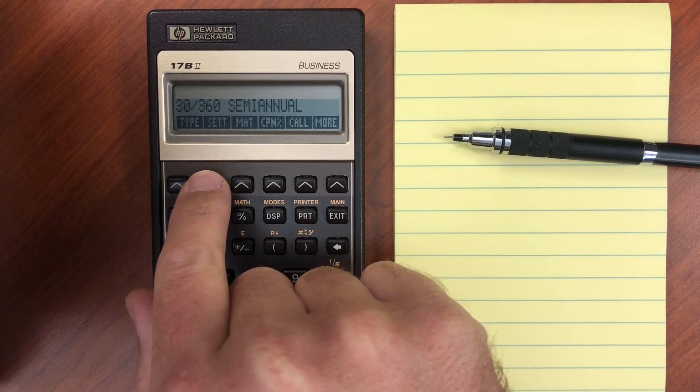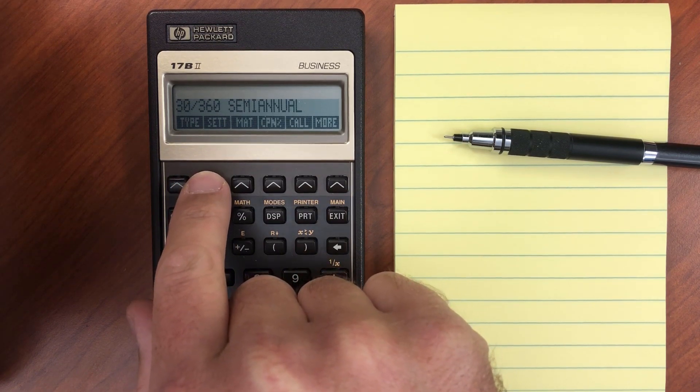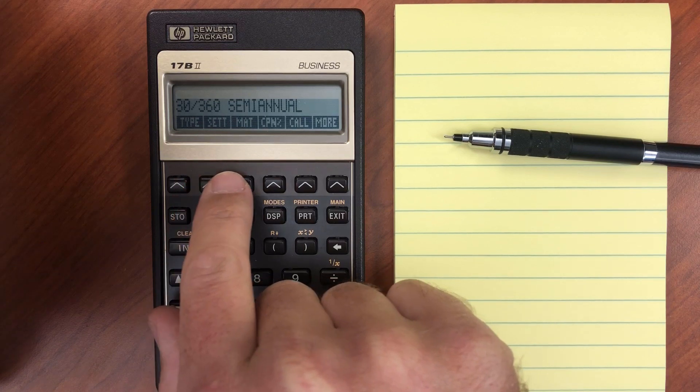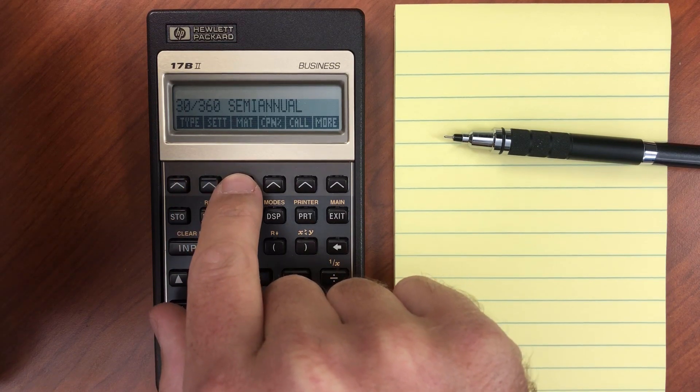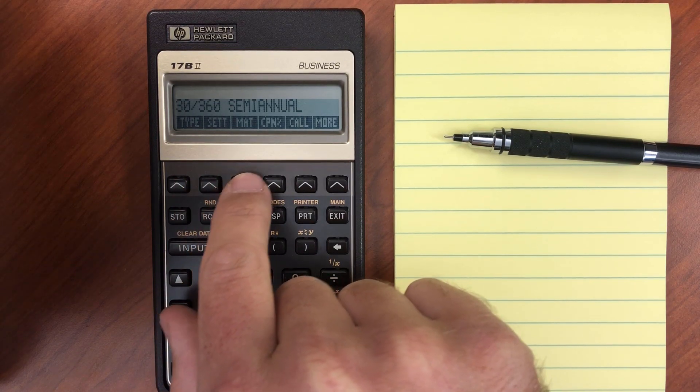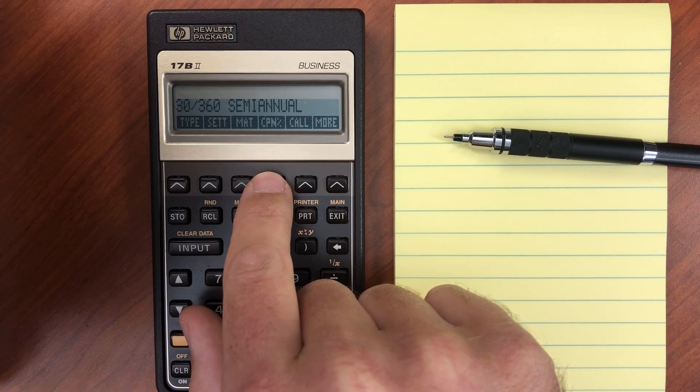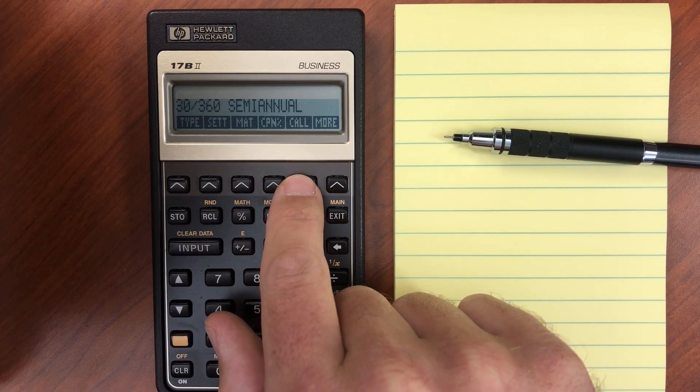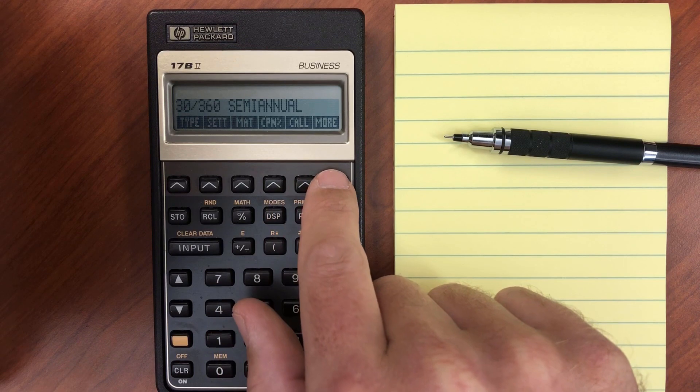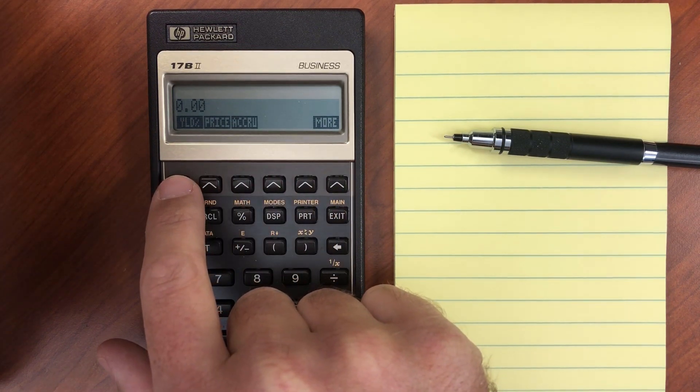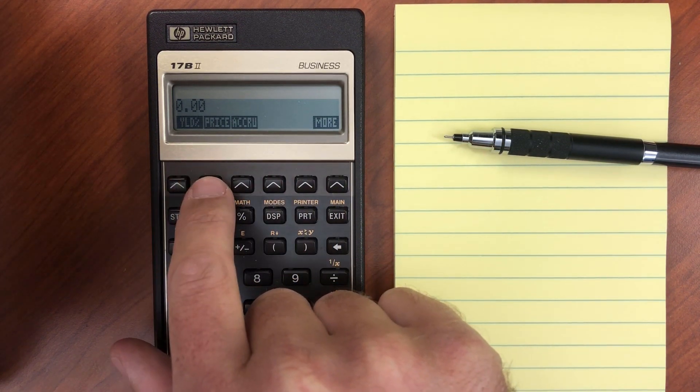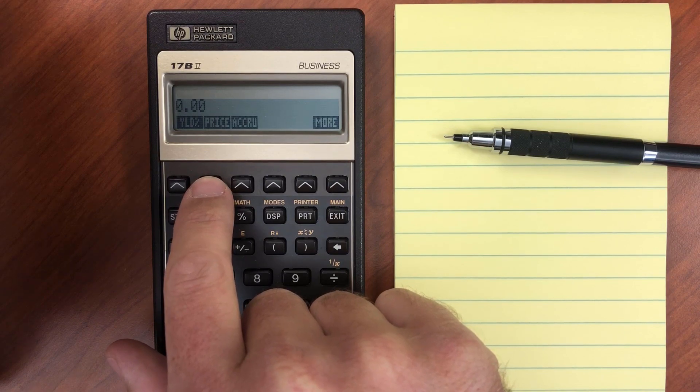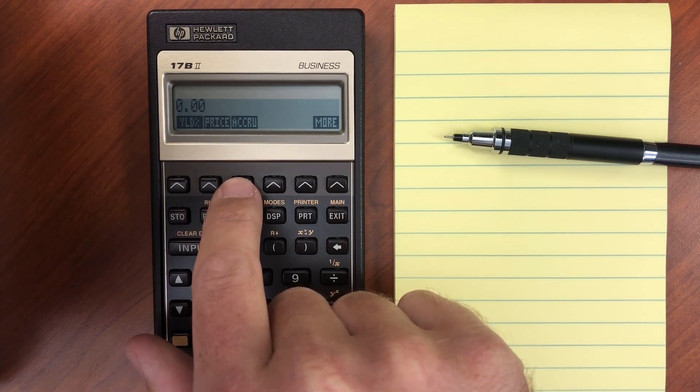The bond menu includes settlement date, which is our purchase date, maturity date, the coupon rate, the call price, and then if we go to more, we have the yield percentage, the price, and the interest accrued.